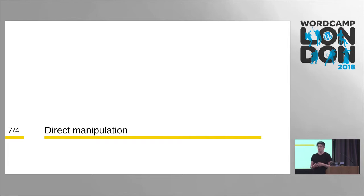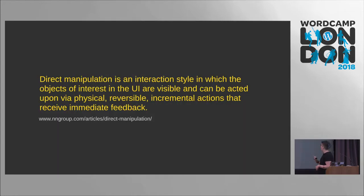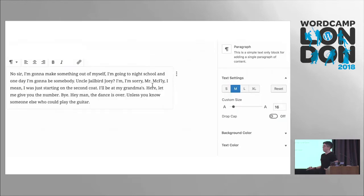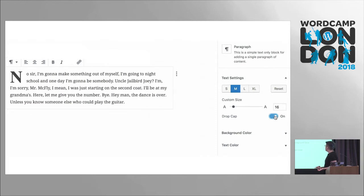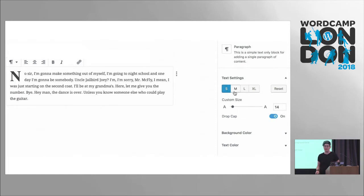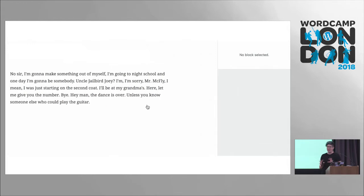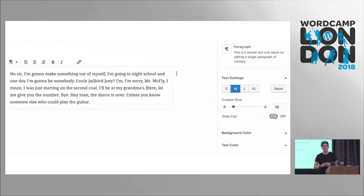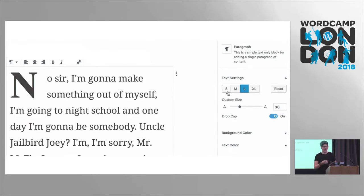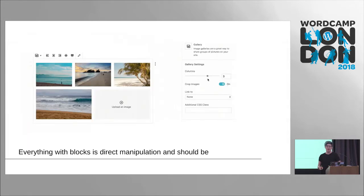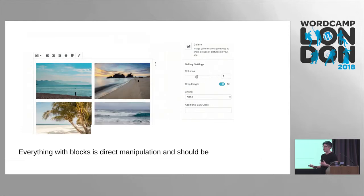One concept mentioned is direct manipulation. This is really a lengthy way of saying that you see something, you click it, and it does something. And this is Gutenberg. Everything with blocks is direct manipulation and should be direct manipulation. We sometimes add a lot more weight to that term than we probably should — you're seeing it, you're clicking, you're interacting.